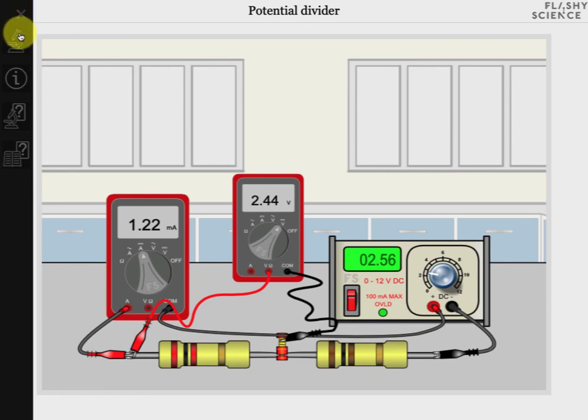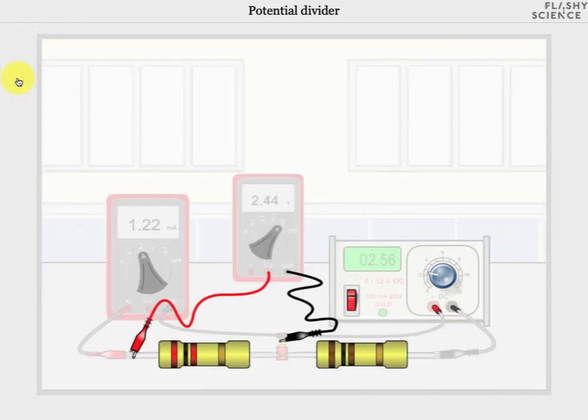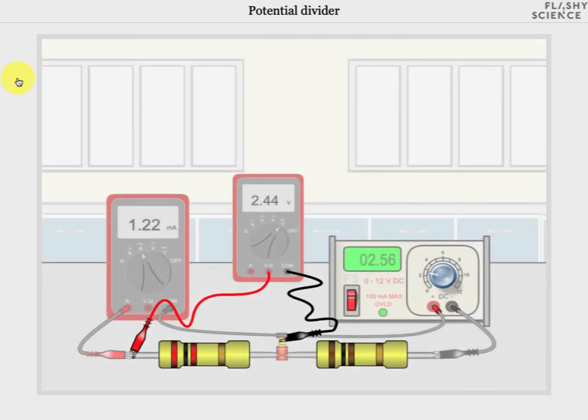The second icon returns you to the experiment when you are on a question screen and will come to those shortly. The third is the click information icon. Selecting this will highlight all of the areas on the screen that can be clicked to control the experiment.